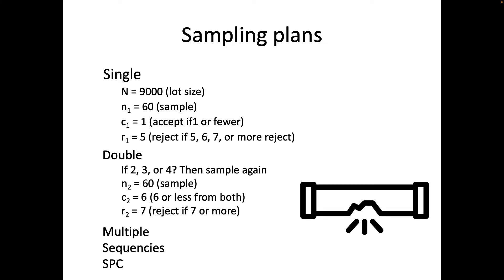You could also do a double sampling plan. What I did is I had a first sample where the C value is 1 but the R value is now 5, which means that we reject if it's 5, 6 or 7. But those in between values if it's 2, 3 or 4 we're not sure what to do and so we have a double sampling. We take another sample and then we say that if it's 6 or less from both of them then we are going to accept it and if it's 7 or more then we're going to reject it. We're going to really just look at the single sampling plans but you could also do multiple or sequences or control charts.